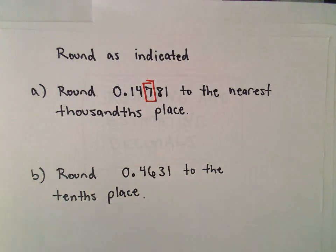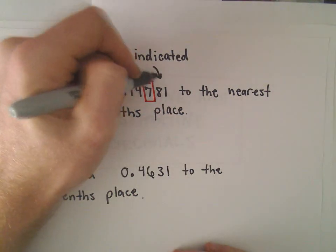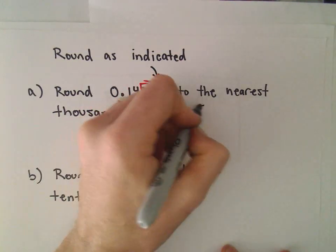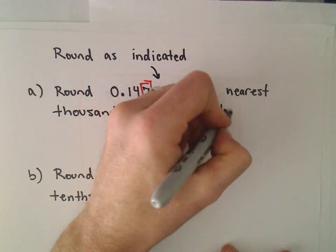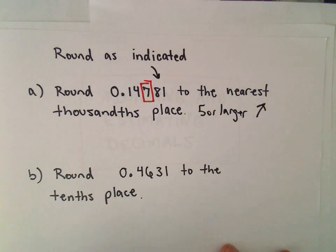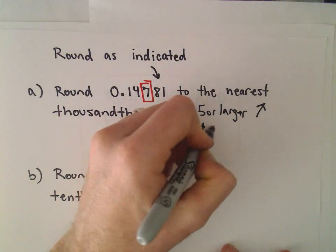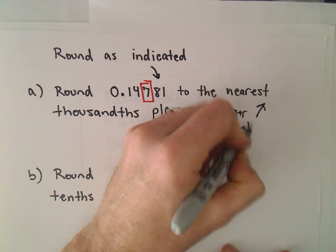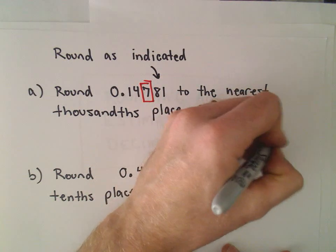What we do is we just look one digit to the right. And if it's 5 or larger, we're going to increase the digit that I've got boxed in. If it's 4 or smaller, we're just going to leave it alone.